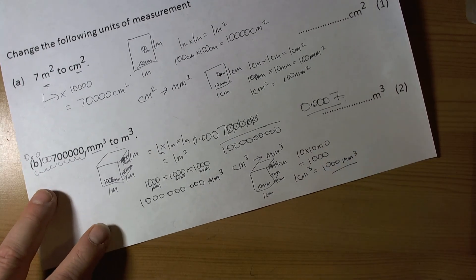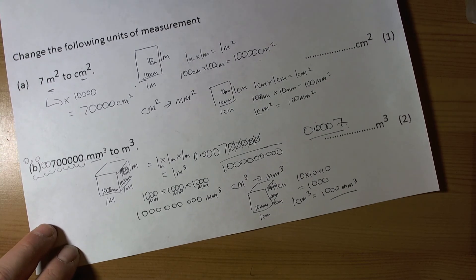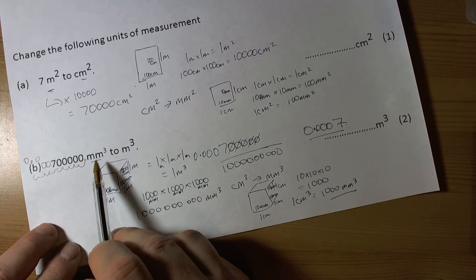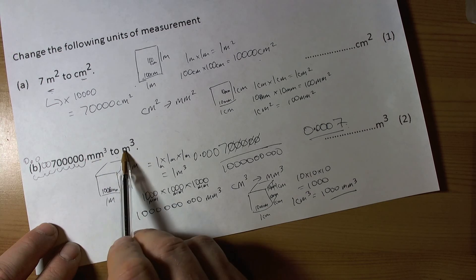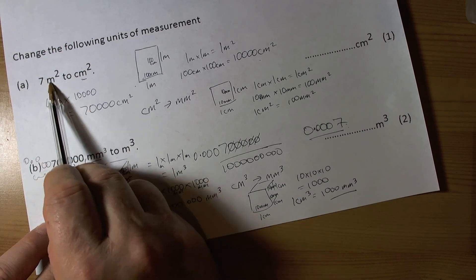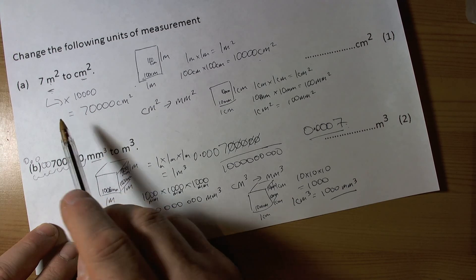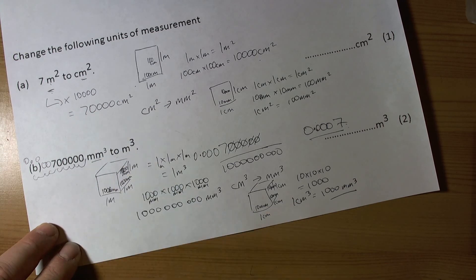That's a quick run through of how to get the conversion factors. If you are going from a small unit to a big unit, you divide. If you are going from a big unit to a small unit, you times. That's a quick review of how to convert units of area and volume.